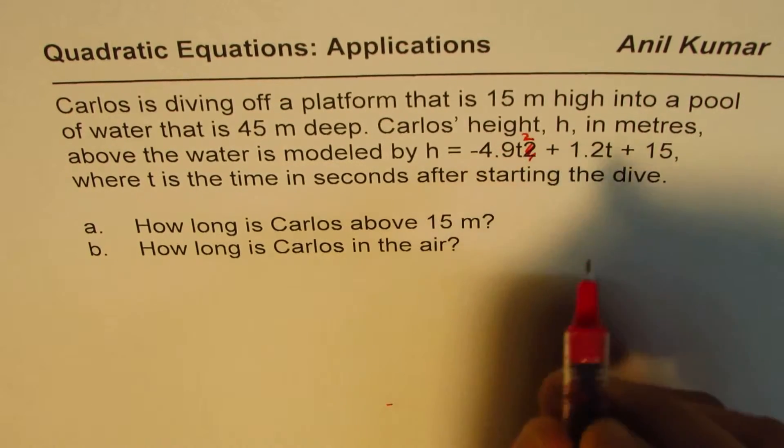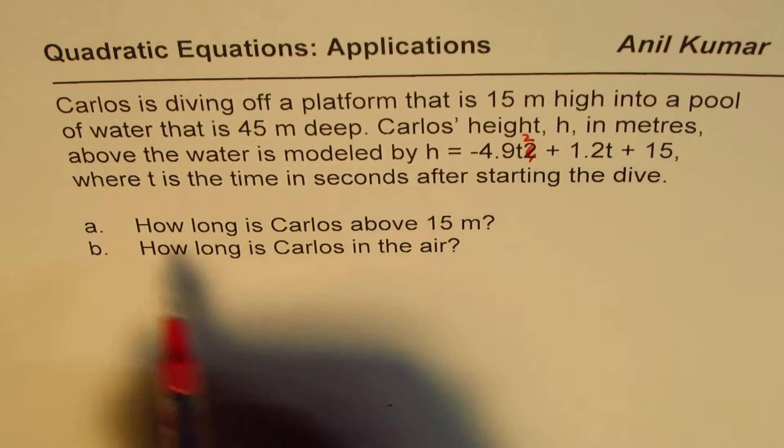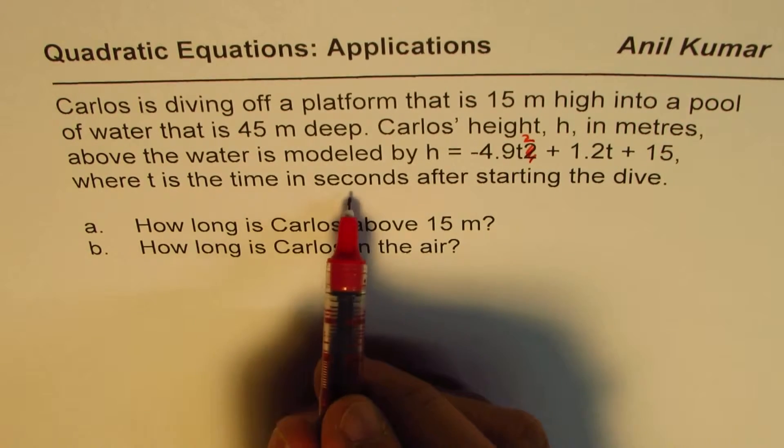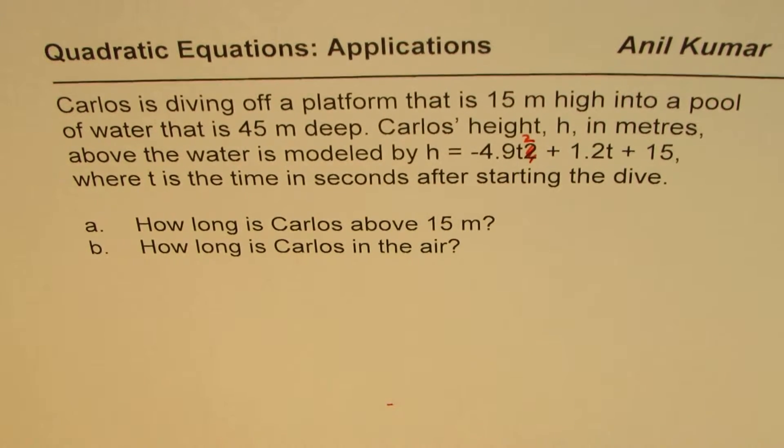height h in meters above the water is modeled by h equals minus 4.9t squared plus 1.2t plus 15, where t is time in seconds after starting the dive.